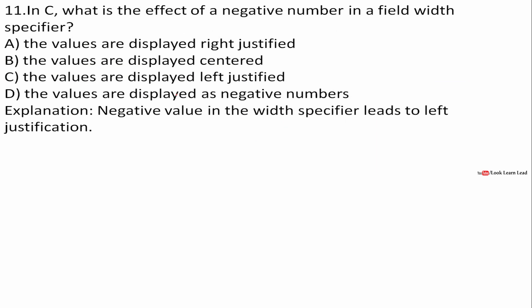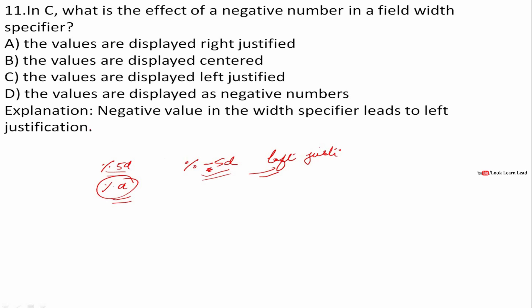In C, what is the effect of a negative number in a field width specifier? The field width specifier is used in printf, for example %5d or %d. If we write %-5d, the minus sign denotes left justification. So the answer is C: the values are displayed left justified.